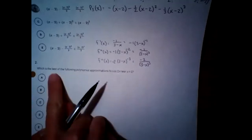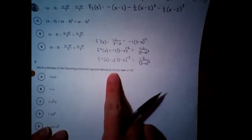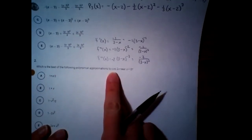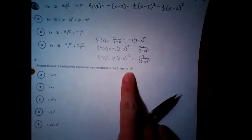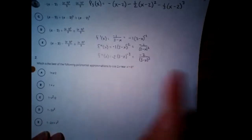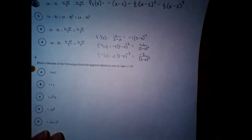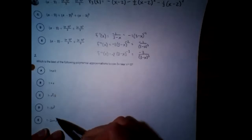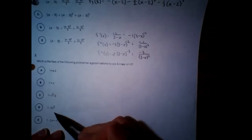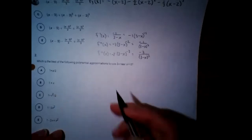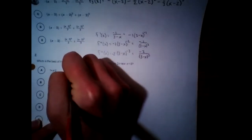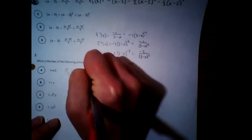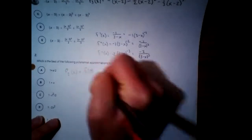Number two: which is the best polynomial approximation to cosine of 2x near zero? The best one is going to use the highest power. It looks like the highest they went here is squared, so I'm going to get the second degree polynomial.